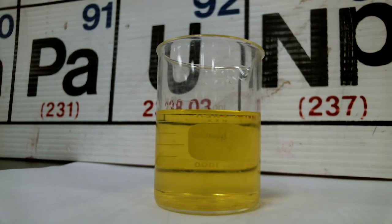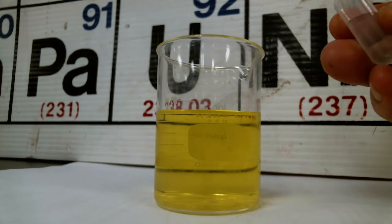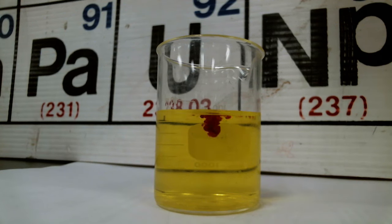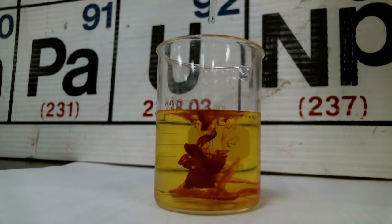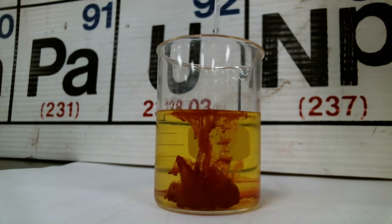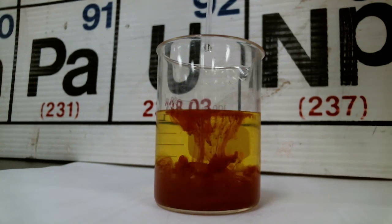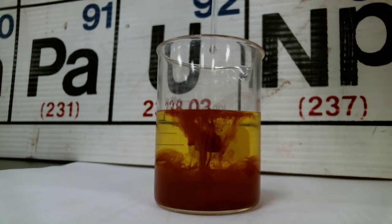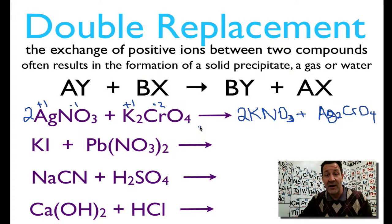Now I'm going to perform the double displacement reaction between silver nitrate and potassium chromate. Here you can see I have my aqueous solution of potassium chromate, and I'm going to add some silver nitrate from my pipette — just a few drops. You can see that it very nicely forms a very pretty brown-red precipitate. That is the result of the double replacement reaction between those two compounds. It is actually a solid — it doesn't really look like a solid, but if I pass it through a filter I can filter it out.